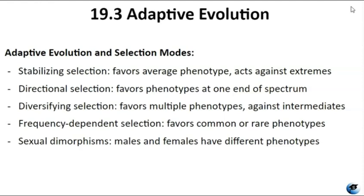Sometimes natural selection favors multiple distinct phenotypes while intermediate ones are less advantageous — scientists call this diversifying selection. An example can be seen in animal populations with different male forms: dominant alpha males use their strength to secure mates, while smaller males employ sneaky tactics. In an alpha male's territory, both alpha and sneaking males are selected for, while medium-sized males face selection against them. Diversifying selection can also occur when environmental change favors individuals on opposite ends of the phenotypic spectrum, such as a mouse population at a beach where light-colored mice blend with sand and dark-colored mice hide in grass, while medium-colored mice don't blend well with either environment.